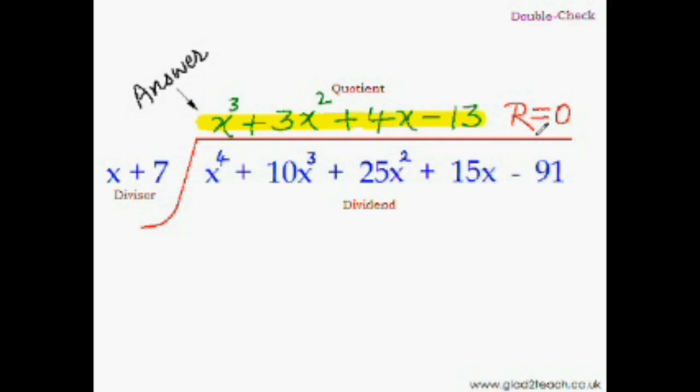So to verify our answer, we need to do the operations on just the coefficients of all these parts, like we always do. So 1 plus 10 is 11, 11 plus 25 is 36, 36 plus 15 is 51, and 51 minus 91 is minus 40. So our dividend is minus 40.